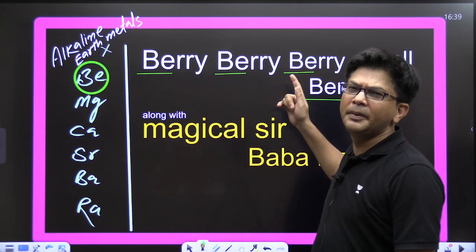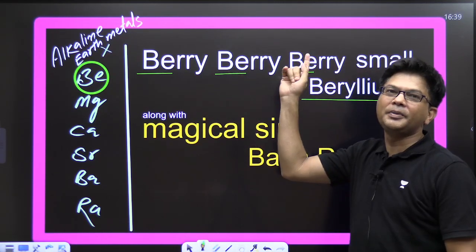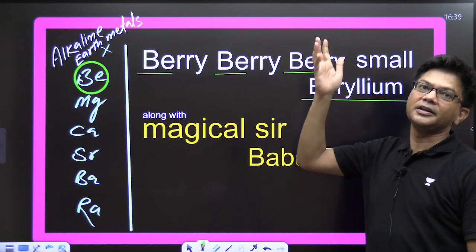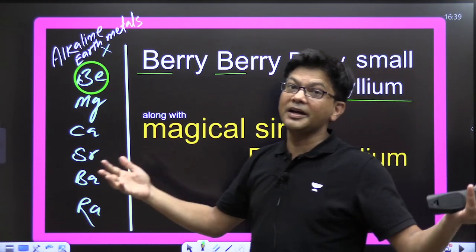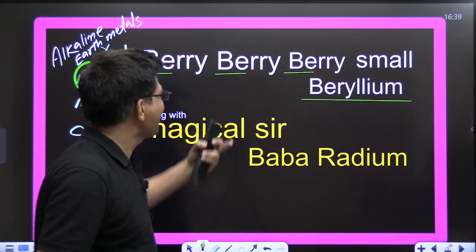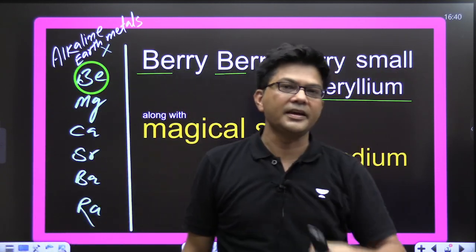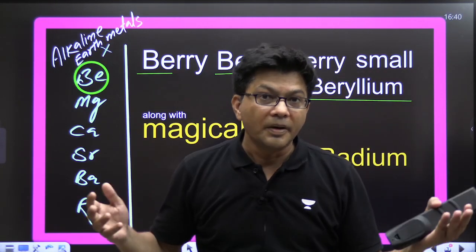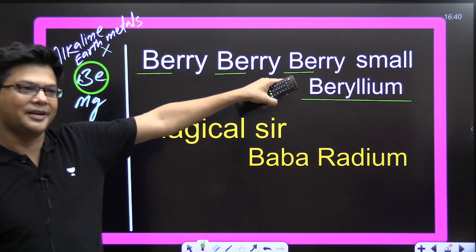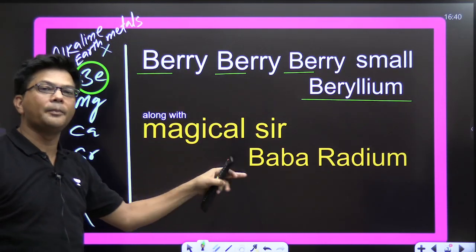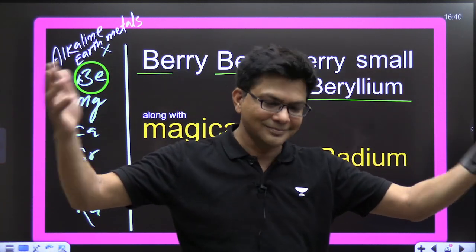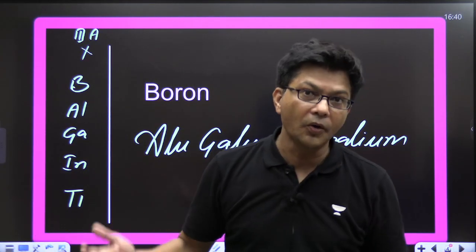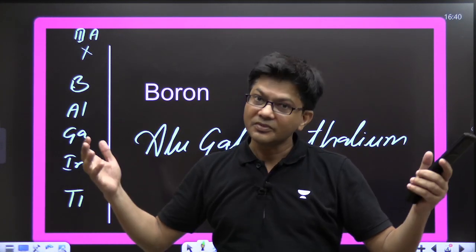Beryllium is very, very small — so beryllium along with magnesium. Everyone remember: Beryllium, Magnesium, Calcium, Strontium, Barium, Radium — these are the alkaline earth metals.